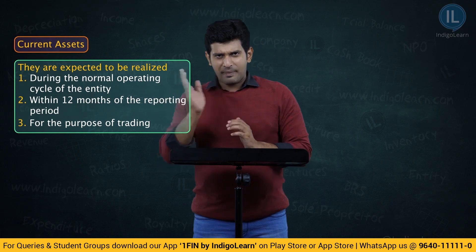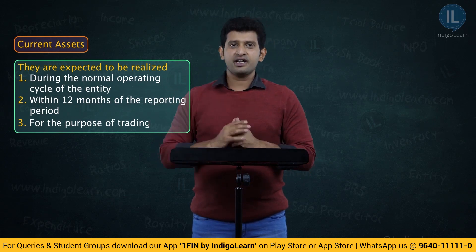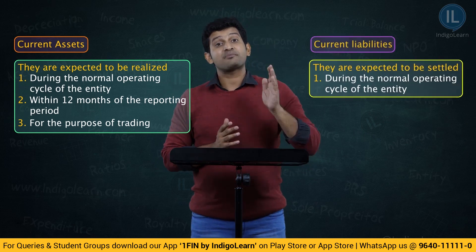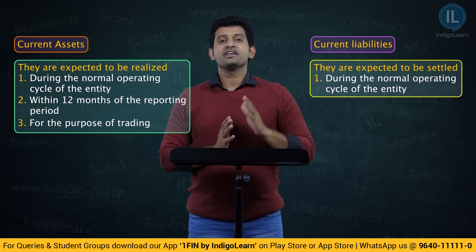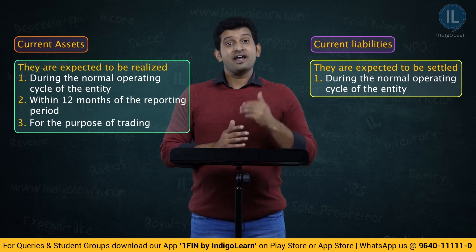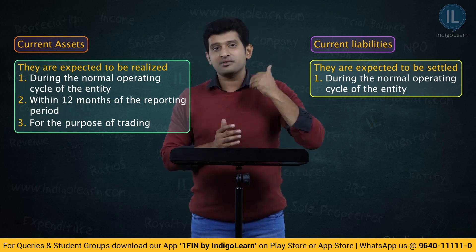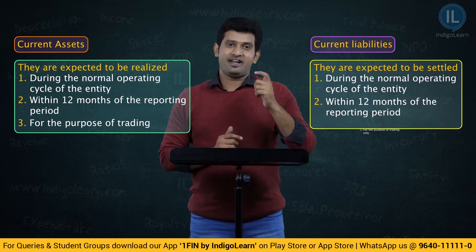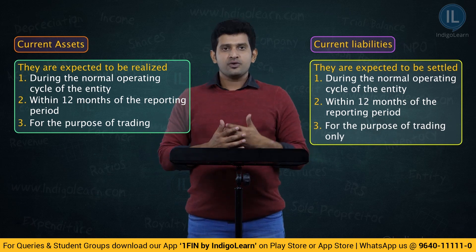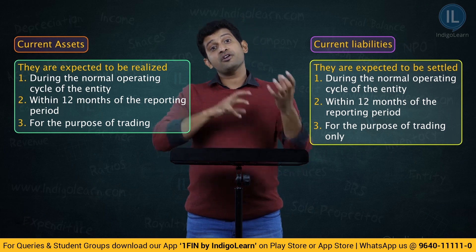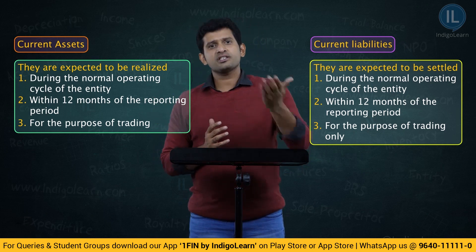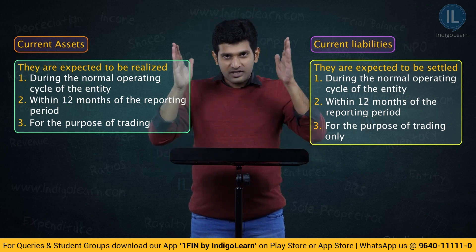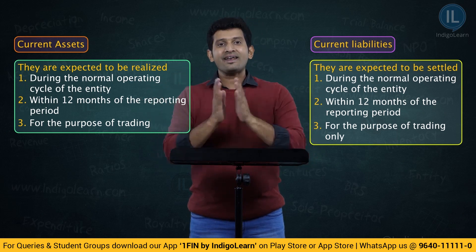Coming to current liabilities, there is a parallel definition between current assets and current liabilities. Just as current assets are expected to be realized within the normal operating cycle, current liabilities are expected to be settled within the normal operating cycle. They are also expected to be settled within 12 months from the reporting period. And lastly, they are made a liability only for the purpose of trading. For example, if you raise equity, you are not raising equity for trading — equity is utilized as a long-term fund to purchase long-term assets. Whereas current liability is raised only for the purpose of trading. So these three points for current assets and three points for current liabilities are in line with each other.